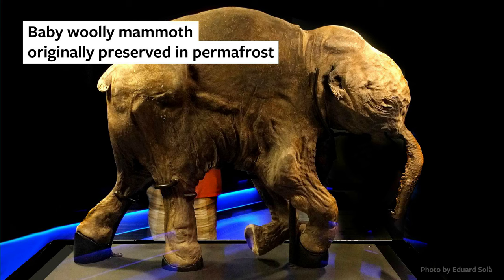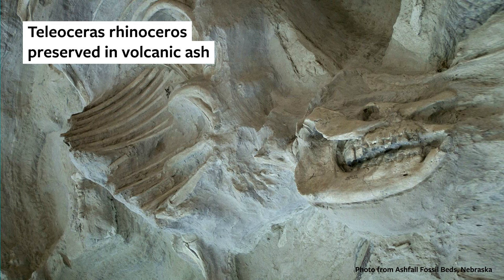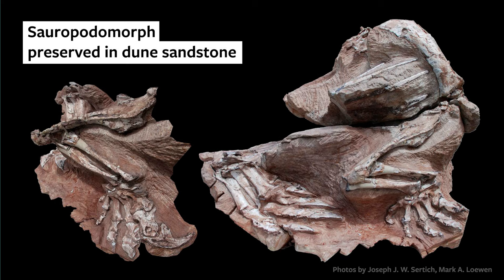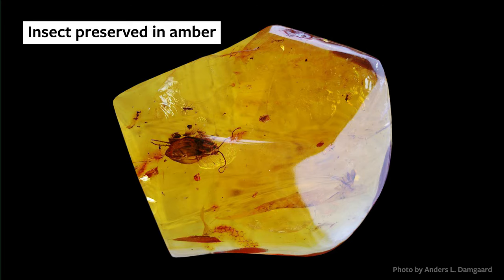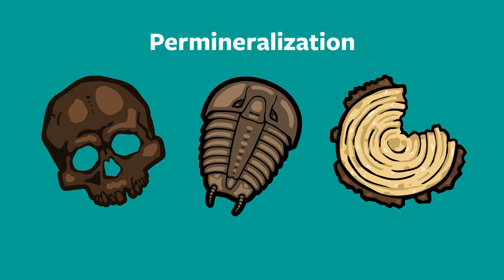Fossils can be preserved in ice, river sediment, volcanic ash, tar, desert sandstone, globs of hardened tree sap — you name it. If conditions are right, hard structures like bones, exoskeletons, or wood can sometimes go through a process called permineralization.